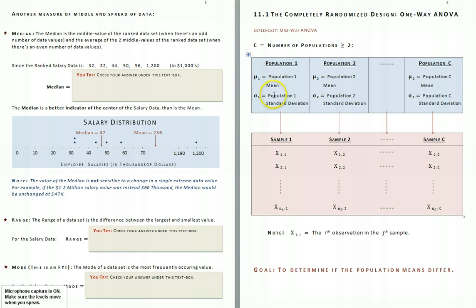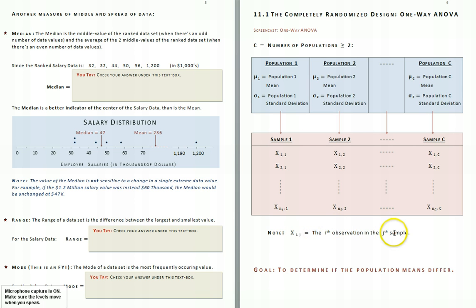From each of our populations, we're going to take a sample. Xij represents, as it did last time, the i-th observation in the j-th sample. So, for example, X2C is the second observation in the c-th sample.